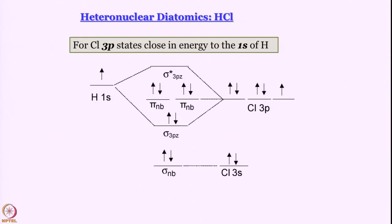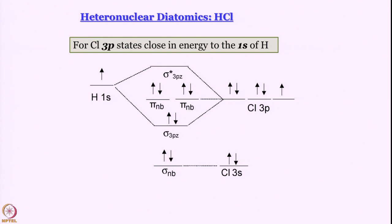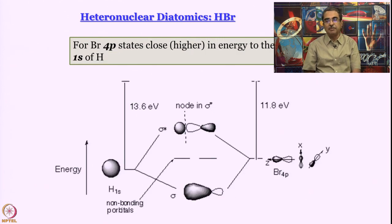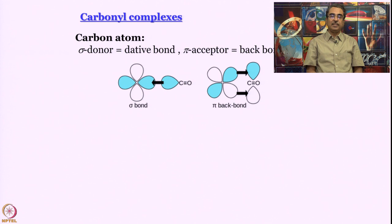You can perform exactly similar discussion for HCl. The only difference being that in case of HCl, the orbitals that have comparable energy with hydrogen atom 1s orbital are actually 3s and 3p orbitals. And for HBr, you need to consider these 4p orbitals. This is how you handle this problem.